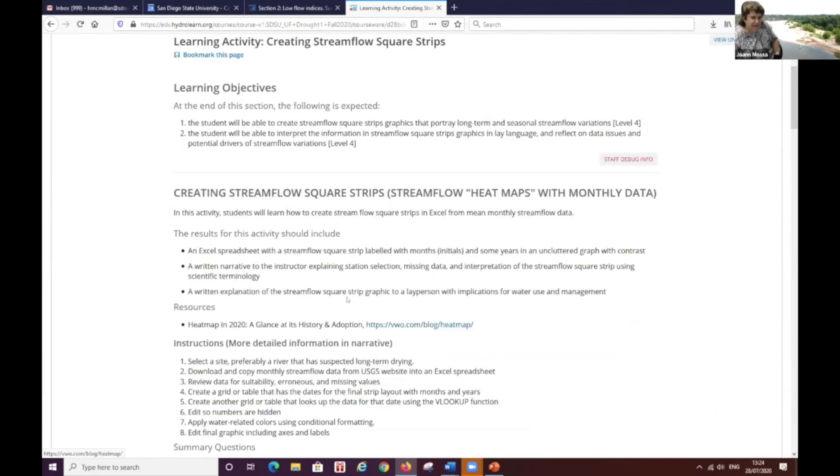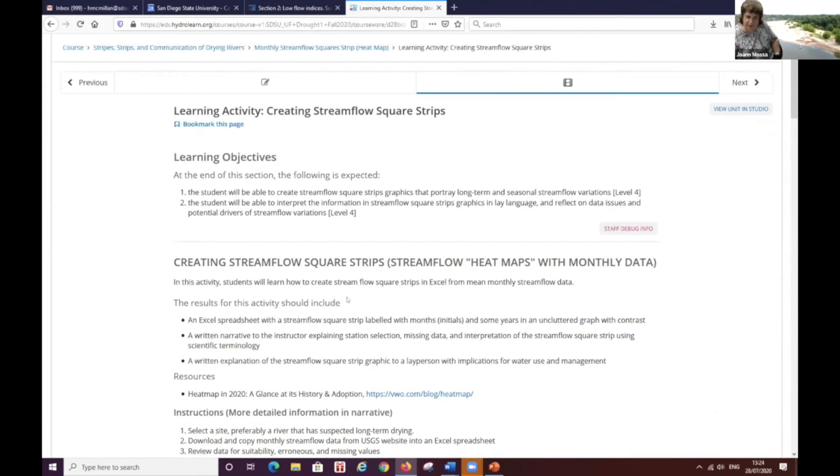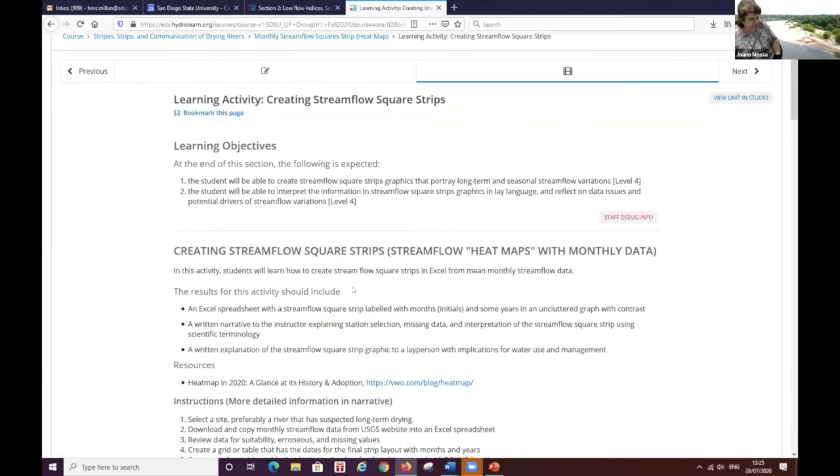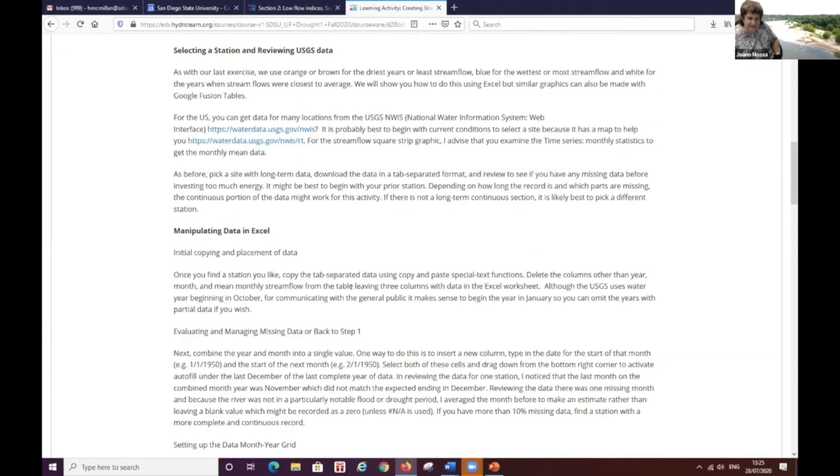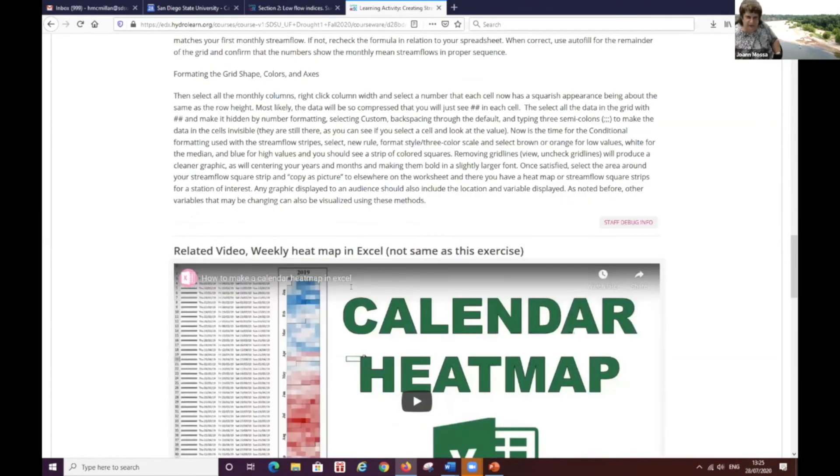And then the learning activity is actually creating this themselves. And this is a little bit more complicated. It can be done in Excel or Google Sheets. I give them the instructions in Excel and I give them again, they have a help at the bottom or if they're stuck, they can see a sample sheet of how to do this, but this is a little bit more complicated because they have to use the VLOOKUP function and set up a couple of different grids to create this.